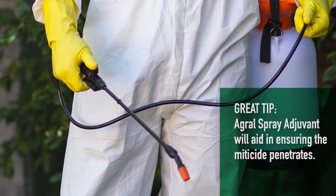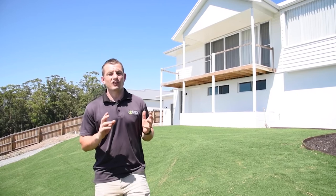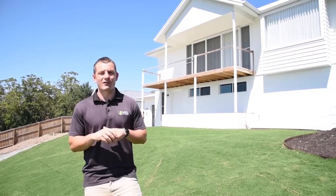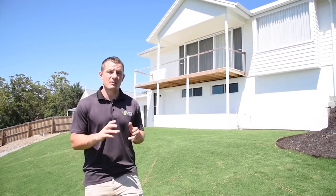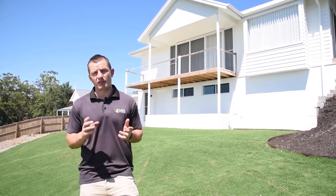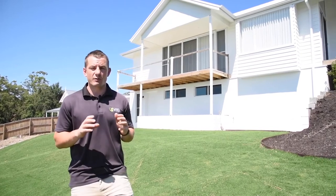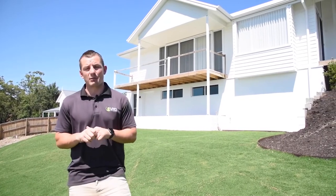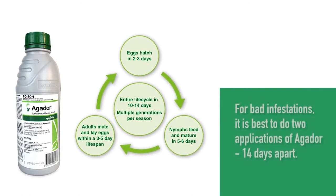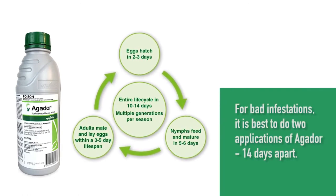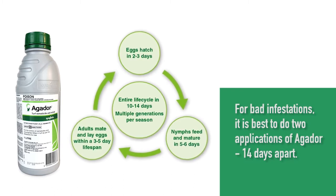Go over the entire lawn a couple of times to ensure you have good coverage. Apply 10 to 20 ml of product to 3 to 5 liters of water to cover 100 square meters. Always ensure you read the miticide label thoroughly before applying. Miticides like Agador target the adult and nymph stage of the life cycle, in which mites spend 90 percent of their life, giving greater opportunity for effective control.